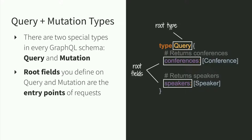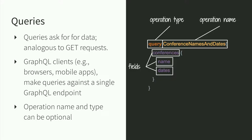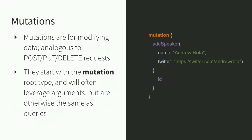Queries are one of the root types in GraphQL — they're for asking for data, analogous to GET requests. GraphQL clients make queries against a single endpoint. Sometimes you'll see named queries, which can be useful for logging or tracking metadata. Mutations are another special root type, for modifying data — analogous to POST or PUT requests, whether you're changing, deleting, or adding something. Mutations work quite similarly to queries: they start with the mutation root type, will likely have arguments, but otherwise behave the same as queries.